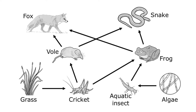Here we have a food web that includes both of the food chains we just talked about. We can find our food chains by following a path through the food web. We start with a producer like our algae, and just follow it through to the aquatic insect, to the frog, to the fox.